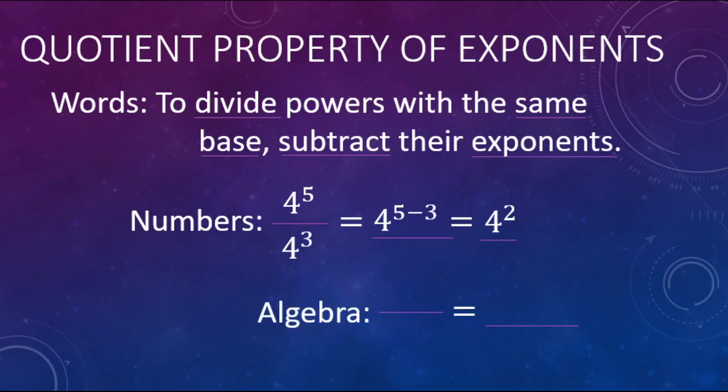Now if you're just using algebraic symbols, b to the m over b to the n, the base is going to be b and then we're going to subtract the exponent. So b to the m minus n.